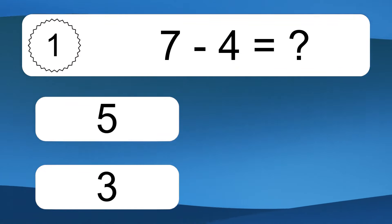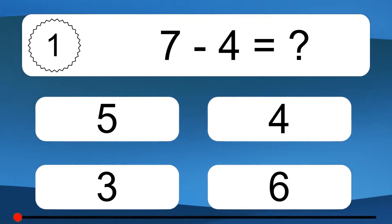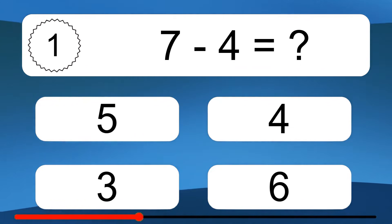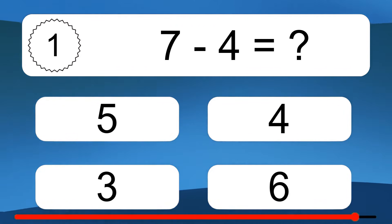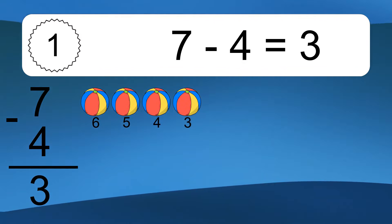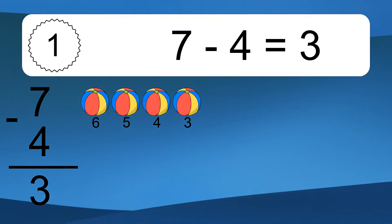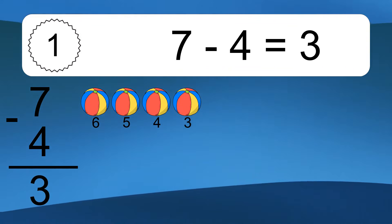7 minus 4 equals what? 7 minus 4 equals 3. Let's count it: 6, 5, 4, 3.